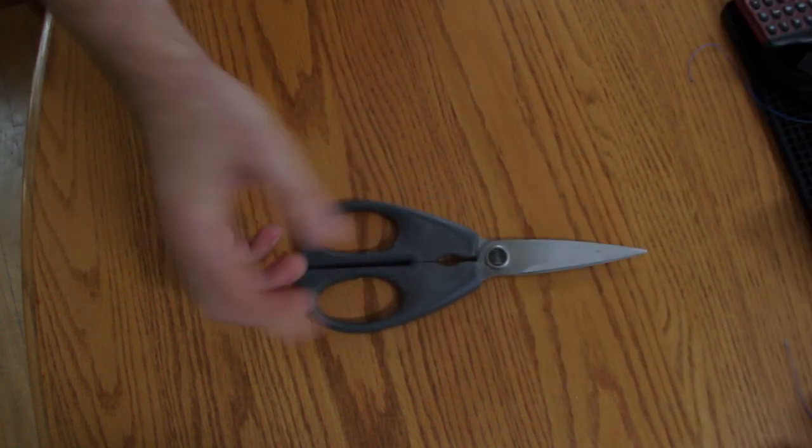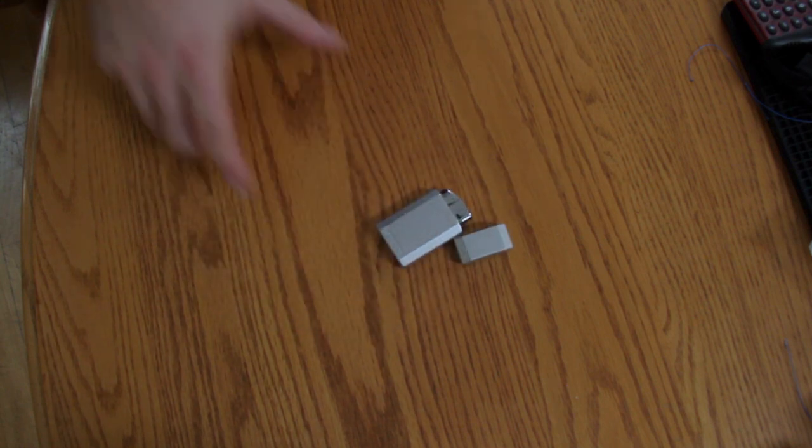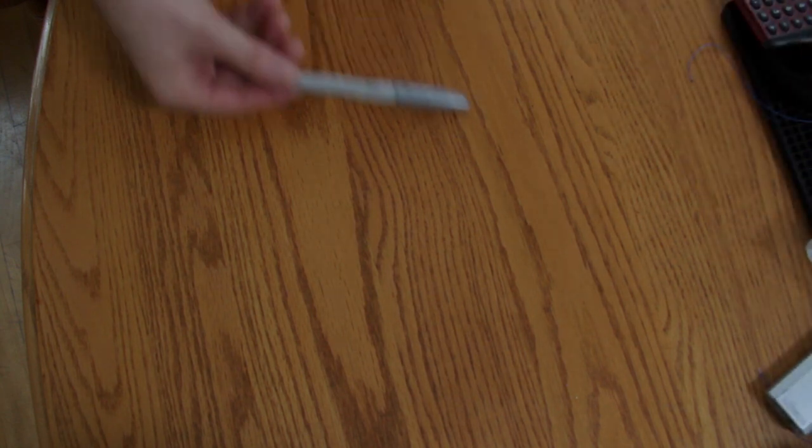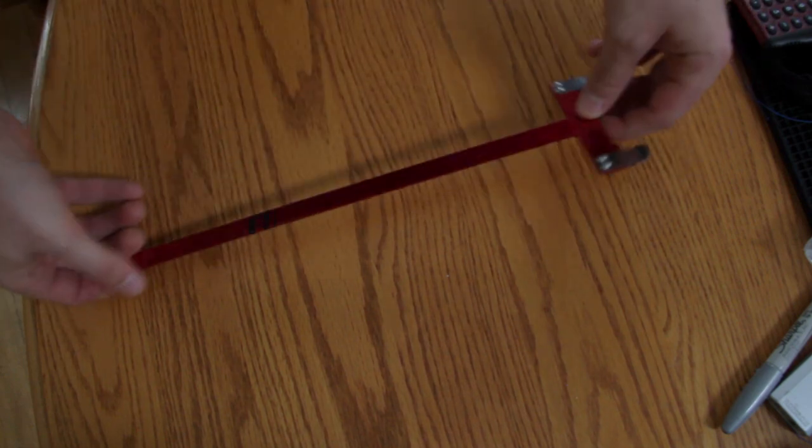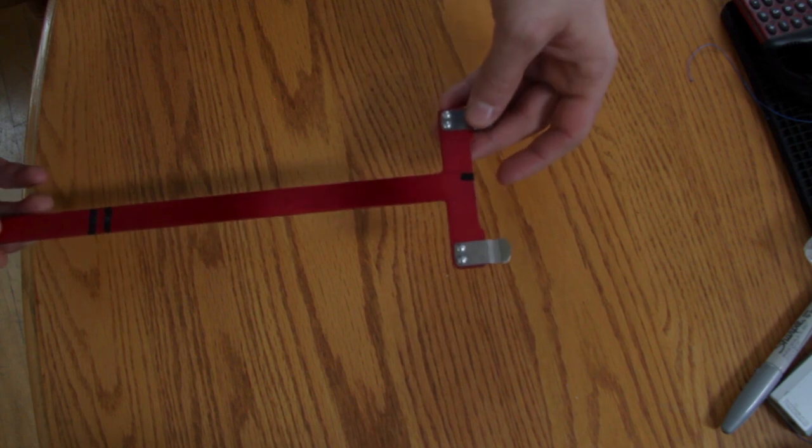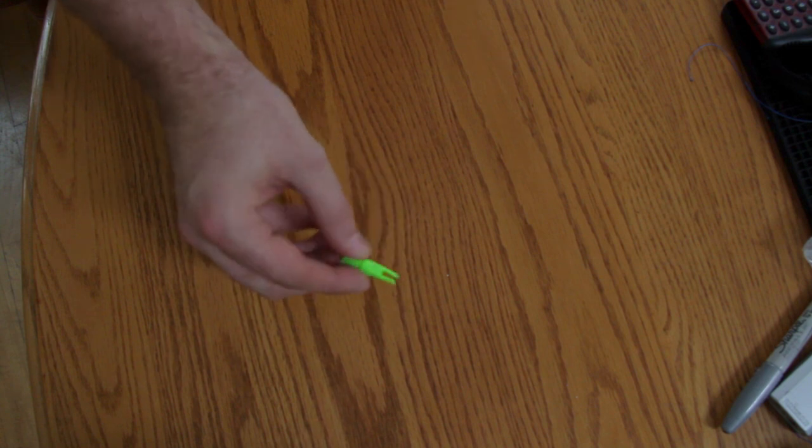Next up is a pair of scissors because you need those to cut the halo serve. Following that, you may want some source of fire in order to melt the serving together. Next up is a marker to mark where you're going to put your knocking point. Followed by a bow square so that you can measure the correct distance and height of your knocking point.